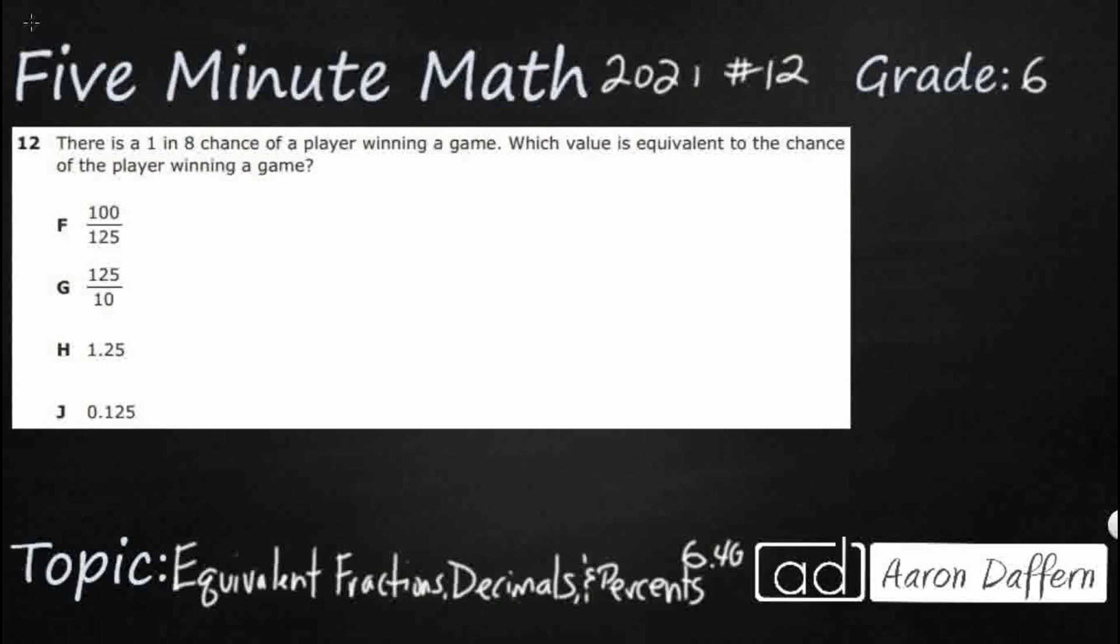So we have a 1 in 8 chance, so they're really just giving us a ratio here, 1 to 8, and we need to find an equivalent chance, so that could be an equivalent fraction or it could be an equivalent decimal. The nice thing about ratios is that we can view them as fractions. So we have 1 to 8, you could see it like this, 1 colon 8, or for us we can look at it as 1 eighth. So now we're looking at which one of these is equal to 1 eighth.